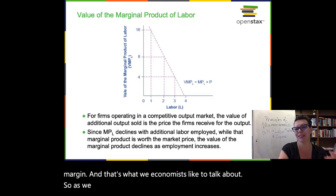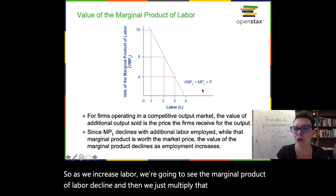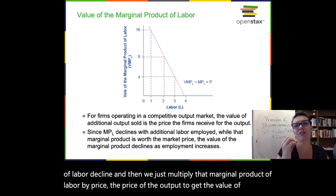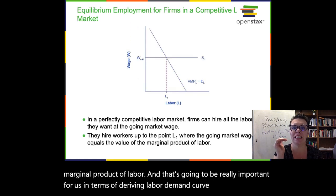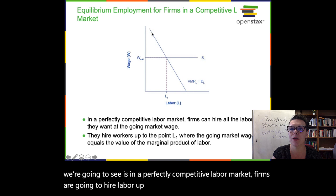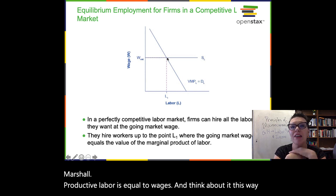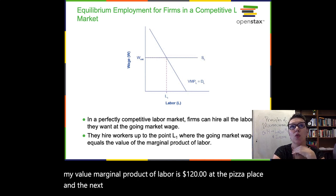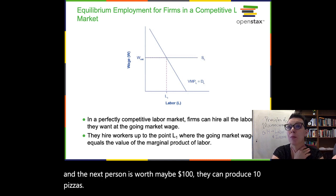As we increase labor, we're going to see the marginal product of labor decline. Then we just multiply that marginal product of labor by price — the price of the output — to get the value of the marginal product of labor. That's going to be really important for deriving labor demand curves. In a perfectly competitive labor market, firms are going to hire labor up until the point where the value marginal product of labor is equal to wages. If my VMPL is $120 at the pizza place, the next person is worth maybe $100, and the third person produces eight pizzas at $10 each — so that's $80.